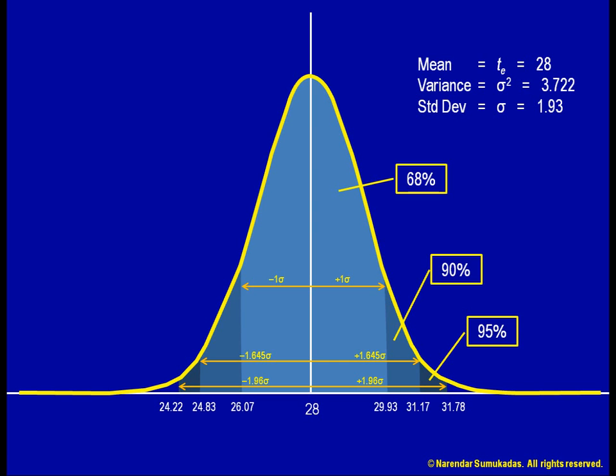For example, suppose we have to promise our client a completion date that involves a late penalty. What date should we promise so that there is only a 2% chance of penalty? We can do that calculation in a similar manner using the mean and standard deviation.